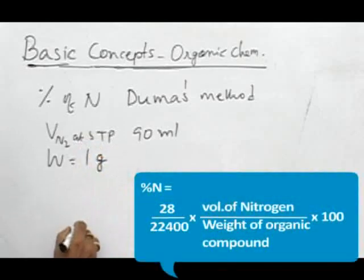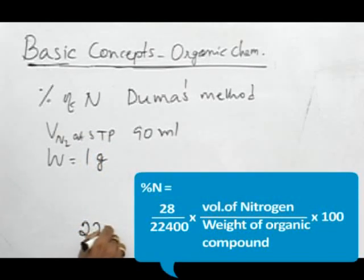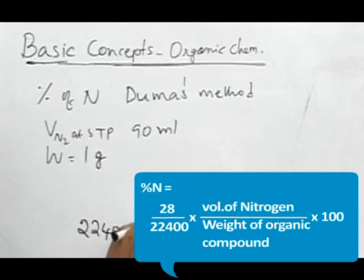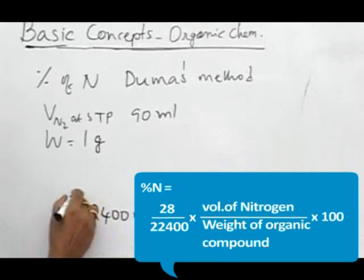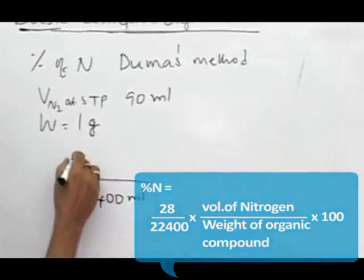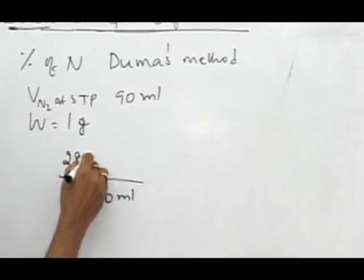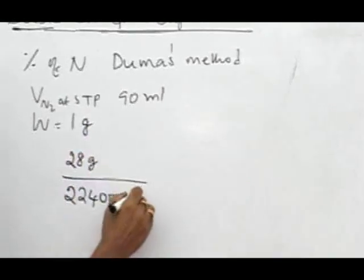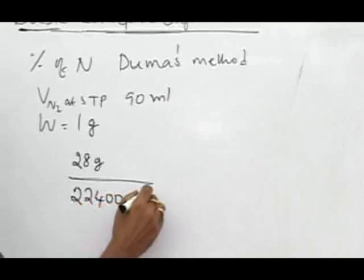We know that 22,400 ml per mole at STP has the weight of 28 grams of nitrogen.